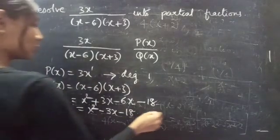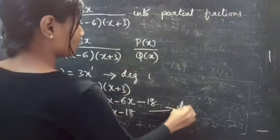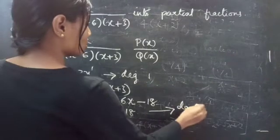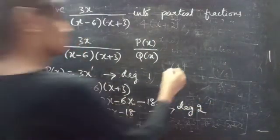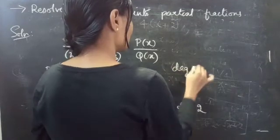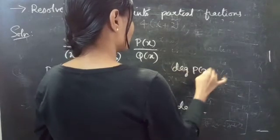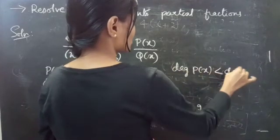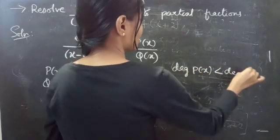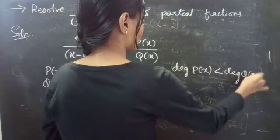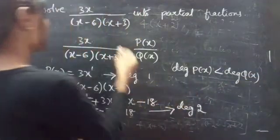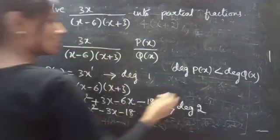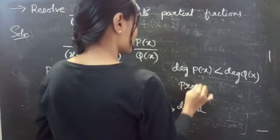The degree of Q(x) is 2. Since the degree of P(x) is less than the degree of Q(x), we can say that the given fraction is a proper fraction.